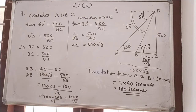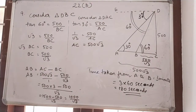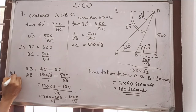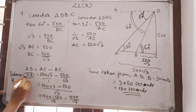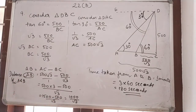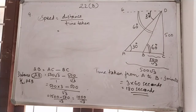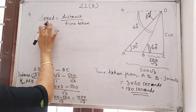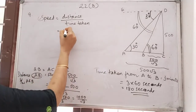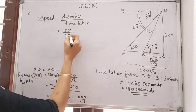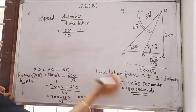The speed of the boat in meters per second where height of the cliff is 500 meters. Distance between A and B is 1000 divided by root 3. Speed is equal to distance divided by time. Distance AB is 1000 divided by root 3, divided by time taken of 180 seconds. So speed equals 1000 divided by root 3 into 1 by 180.